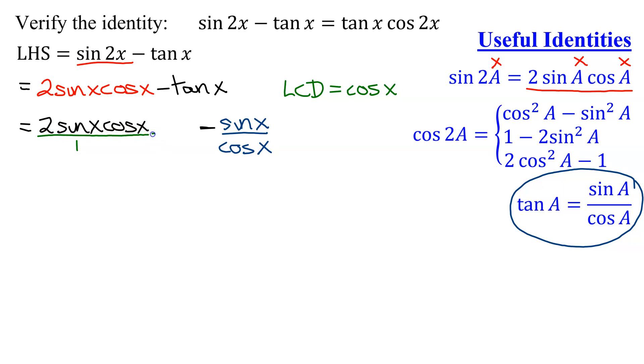Now I need to multiply it by cosine x in the denominator to get my LCD in the denominator. And if you multiply the denominator by cosine x, you also have to multiply the numerator by cosine x, because all I'm multiplying by here is a 1 in disguise.